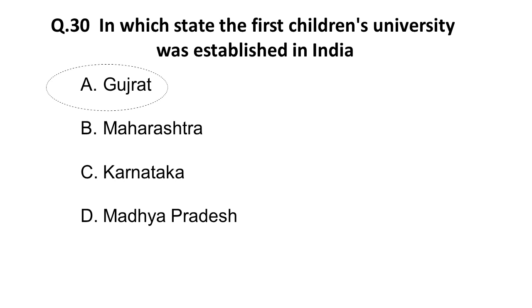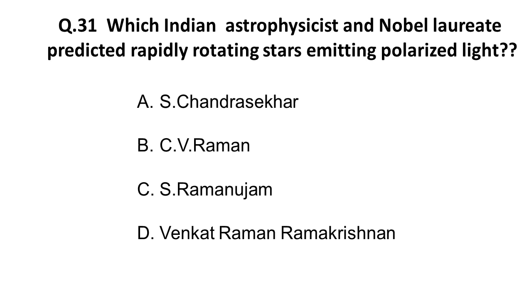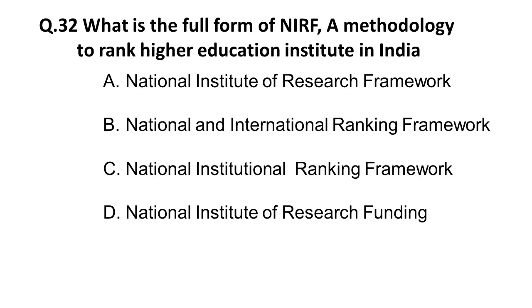Question 31: Which Indian astrophysicist and Nobel laureate predicted that rapidly rotating stars emit polarized light? The correct answer is A: Chandrasekhar — Professor S. Chandrasekhar predicted that rapidly rotating stars emit polarized light.